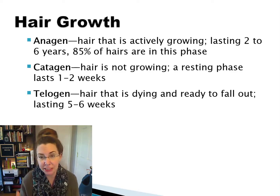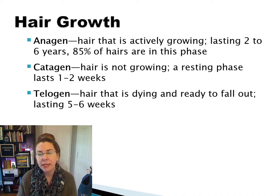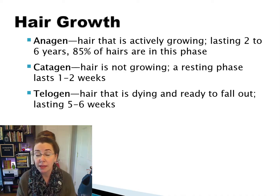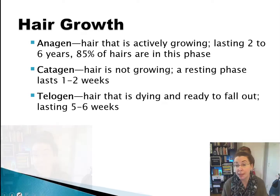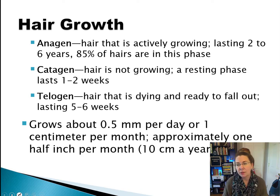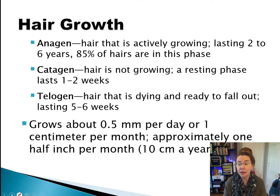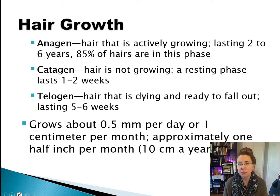A telogen hair is one that is actively dying and ready to fall out. It usually lasts five to six weeks. During that time, a new anagen hair is growing underneath it, getting ready to push it out from the follicle. Everybody's hair generally grows about half a millimeter per day, or one centimeter per month, or approximately half an inch per month — about 10 centimeters to about five and a half inches a year.